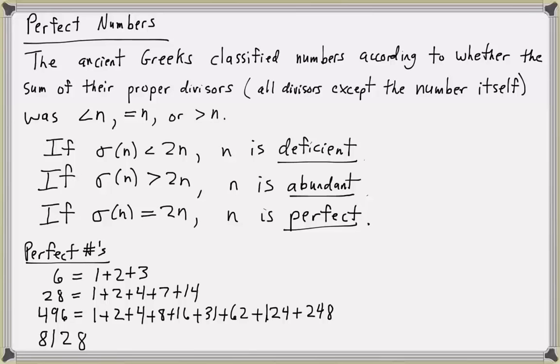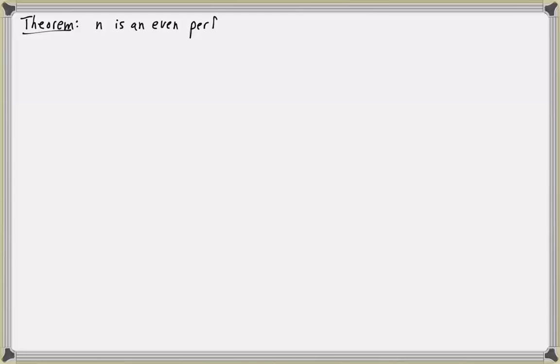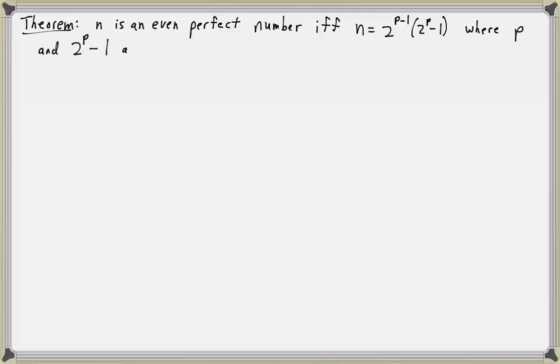The next theorem about even perfect numbers was first proved by Euclid. n is an even perfect number if and only if n equals 2 to the power of p minus 1 times 2 to the p minus 1, where p and 2 to the p minus 1 are both prime numbers.